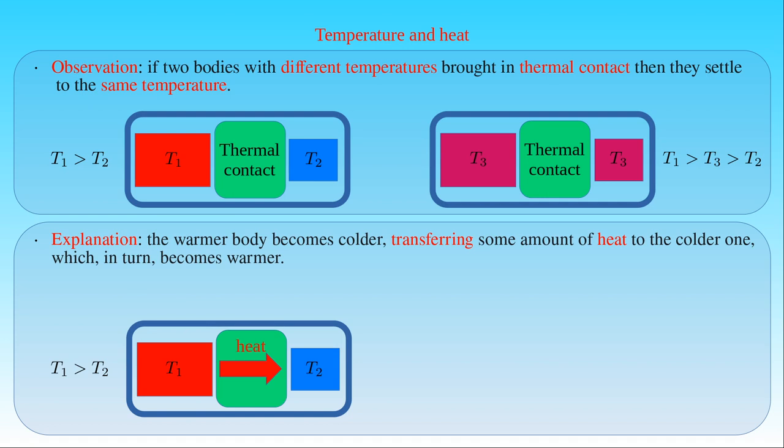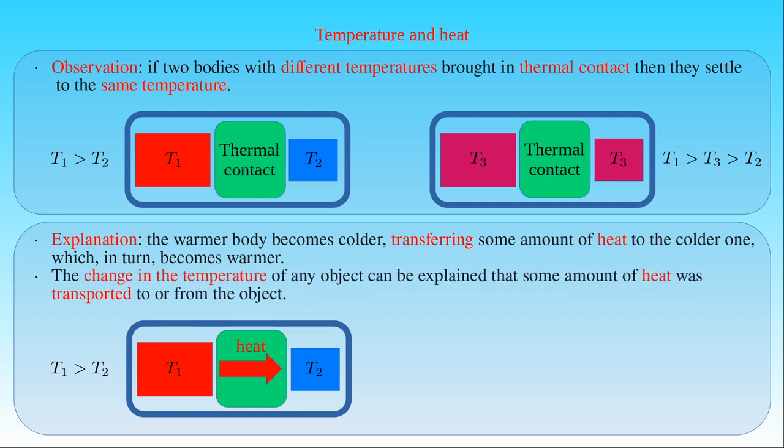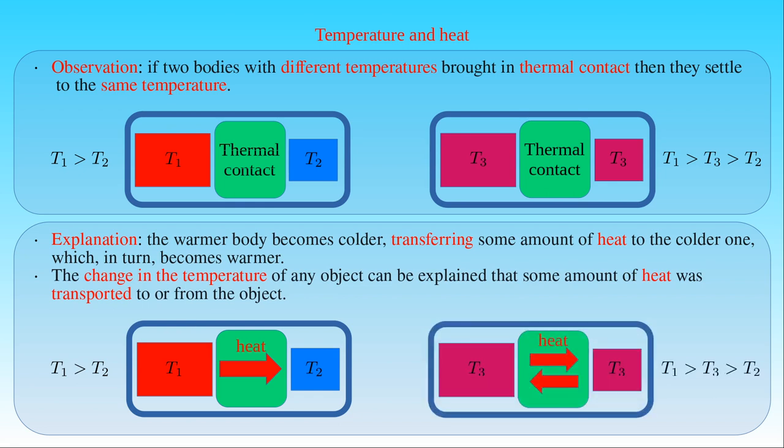Therefore, the change in the temperature of any object can be explained by the fact that some amount of heat was transported to or from the object. Once the temperatures of the bodies are equal, the net heat transfer between the two bodies is zero, that is the objects exchange equal amounts of heat among themselves for a given time interval.